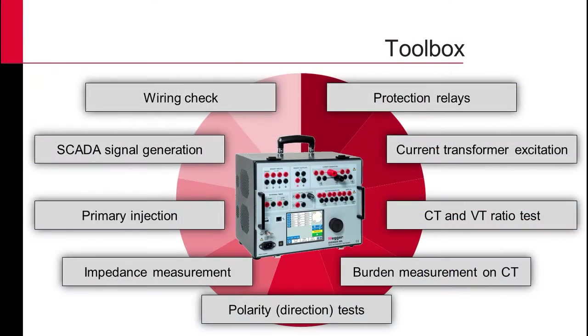The Sverker 900 is suitable for commissioning and maintenance of distribution and generator power substations and can be used to perform such tasks as testing protection relays, plotting current transformer excitation curves, current and voltage transformer ratio tests, burden measurement for current transformer circuits, and polarity tests.